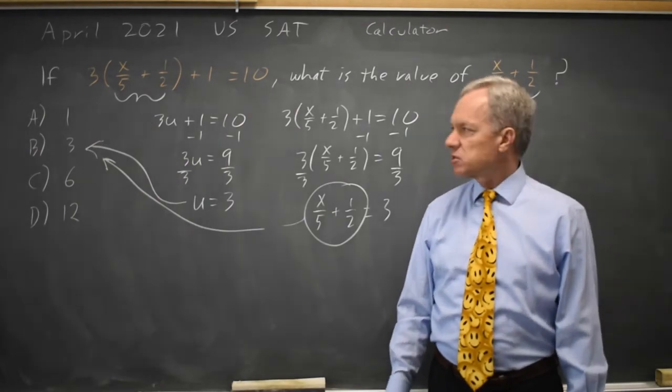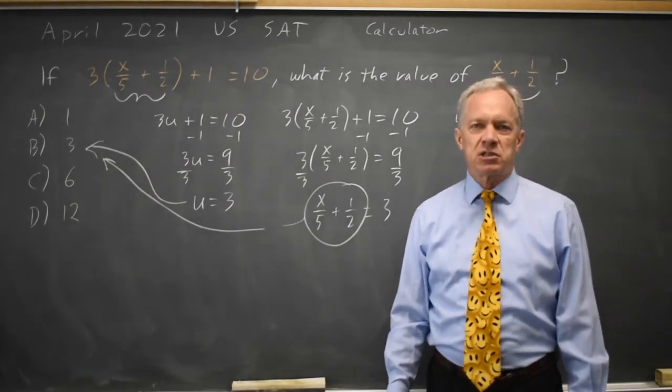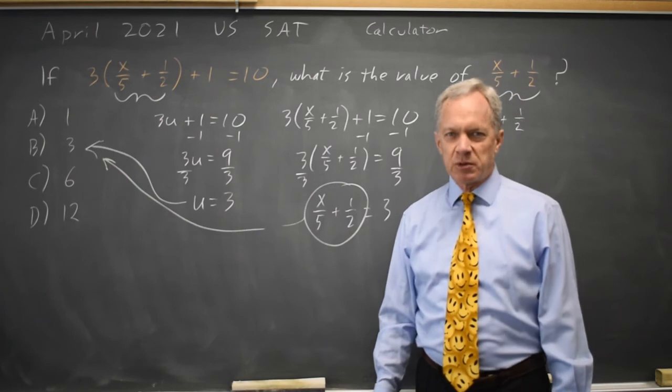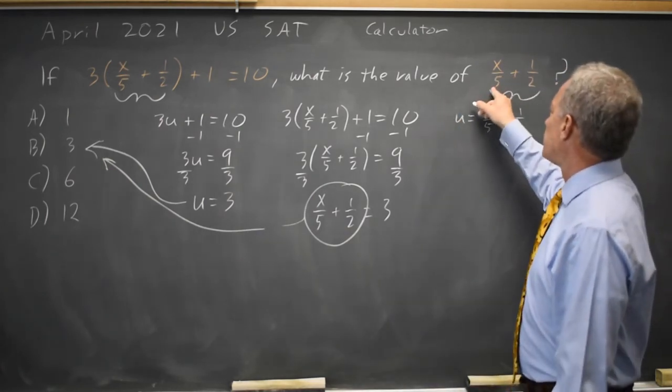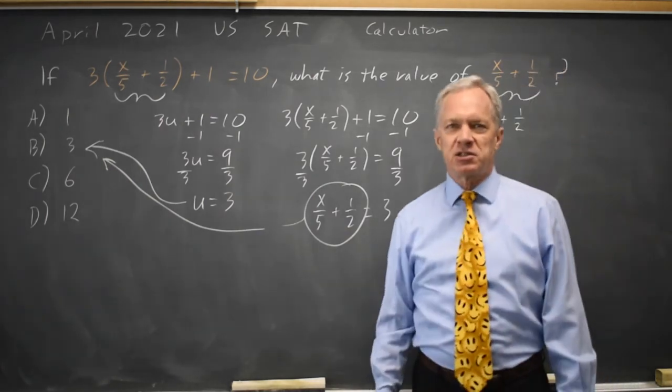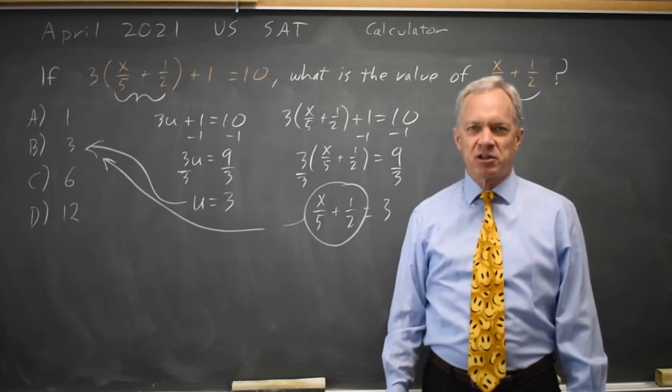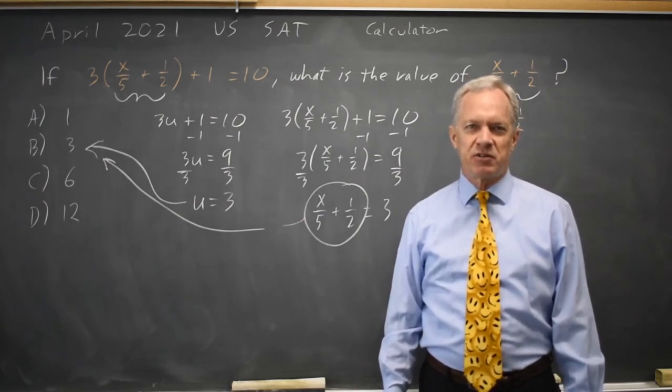We could also solve for x, but solving for x would be a lot more work. And then once we solve for x, we have to divide that answer by 5 and add 1 half. And that's just going to make us cry. And we're not here to cry, not even on SAT.